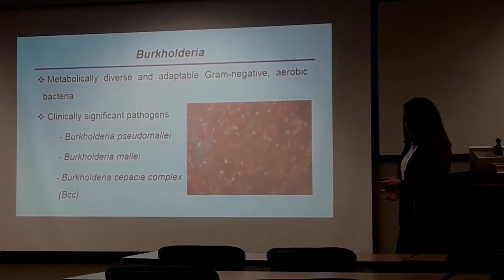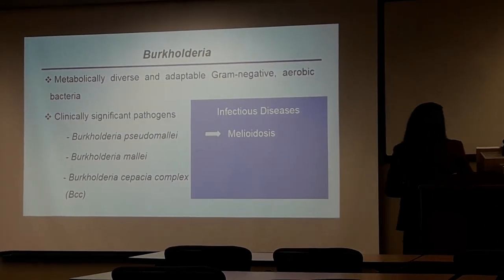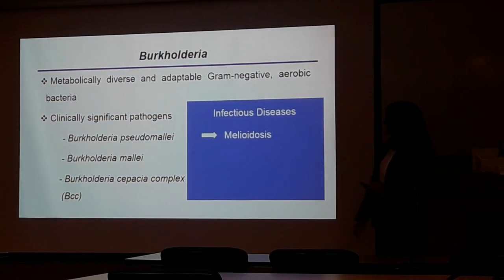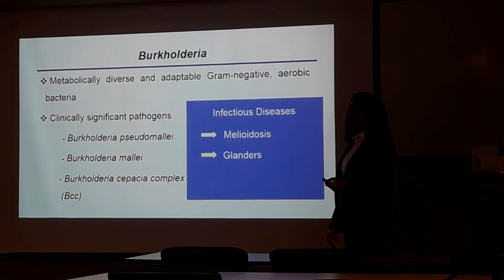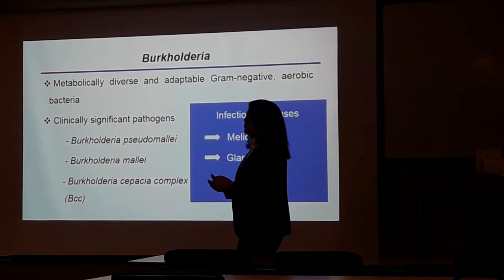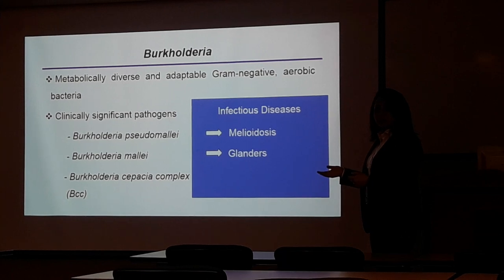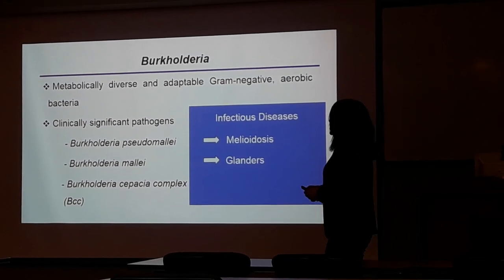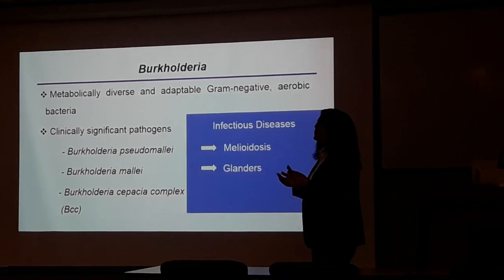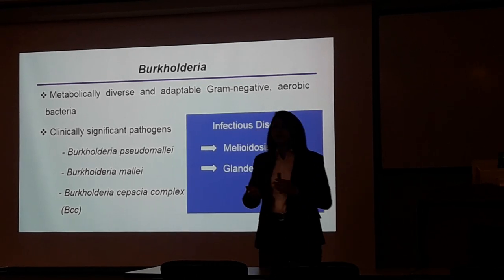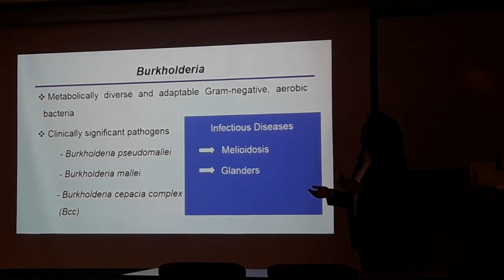Burkholderia pseudomallei is a soil saprobe that causes an infectious disease called melioidosis, mostly affecting humans. Burkholderia mallei, which is closely related to B. pseudomallei, causes an infectious disease named Glanders, which mostly infects horses, dogs, or cats, but humans can also be infected if in close contact with those animals. The Burkholderia cepacia complex comprises a subgroup of the Burkholderia genus with at least 20 species, and they can cause opportunistic infections in immunocompromised patients, such as cystic fibrosis patients.